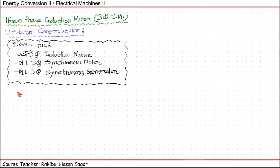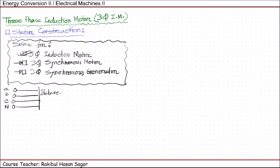The three-phase electrical supply is connected with the stator. Before we see the construction, we need to know the characteristics of three-phase current when it is connected with a balanced load. Suppose we have a three-phase supply — phase A, phase B, phase C — and we have a neutral connection N, connected with a balanced load. These three-phase and balanced load concepts were covered in your AC circuit course.